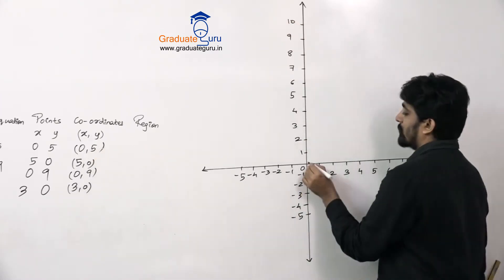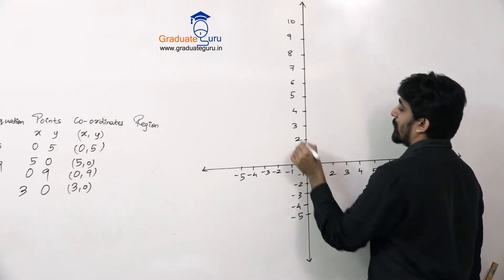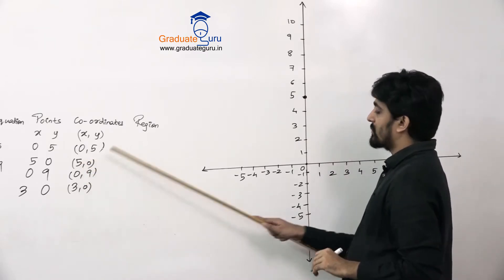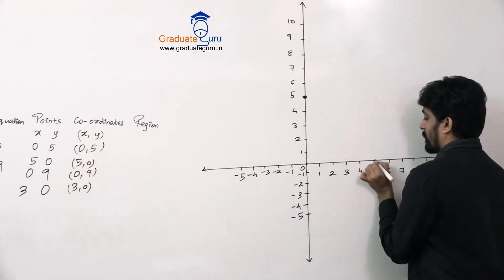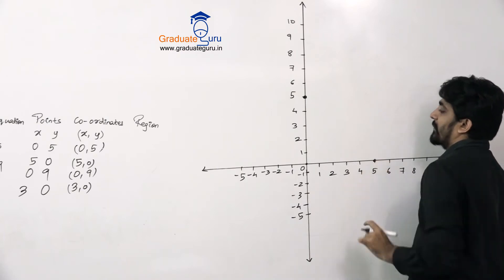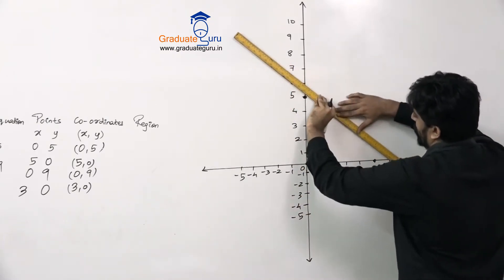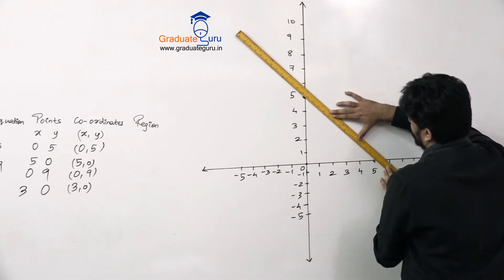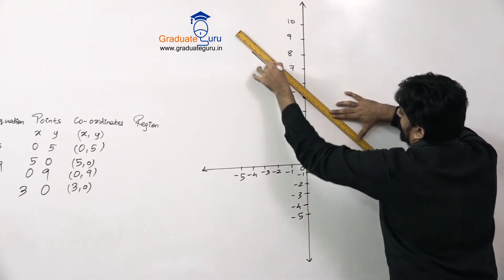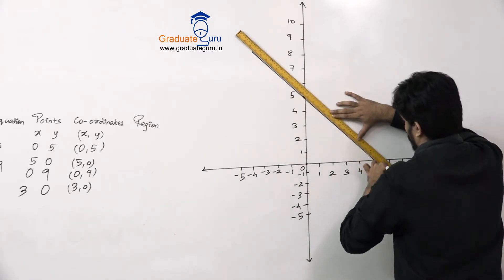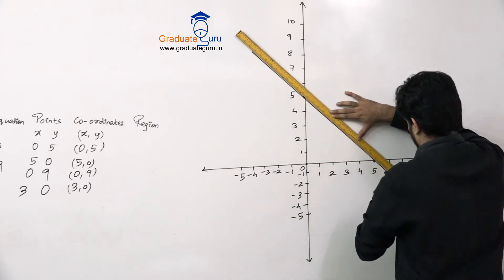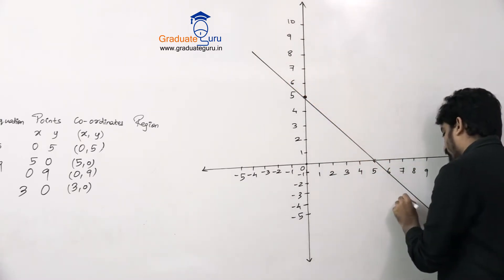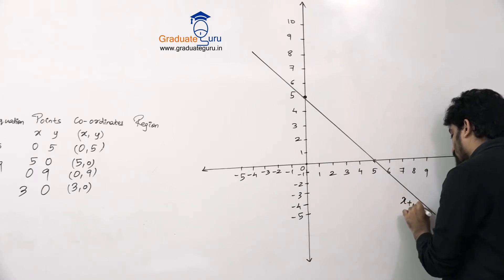So (0, 5) — that's 0 here and 5 up there — this is one point. Then we have (5, 0) — that's the second point. We draw a line through these two points, and this is the line of the equation x plus y is equal to 5.